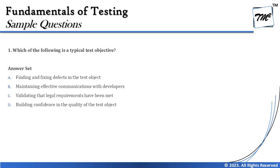Going back to the question: 'which of the following is a typical test objective?' — meaning something very common, not just generic. Comparing option C and D: C talks about legal requirements and D talks about building confidence. Legal requirements are not really applicable in every type of product — for example, a retail application might not have any particular legal association, whereas a website may need to meet W3 standards.